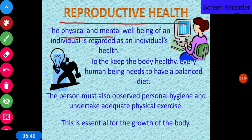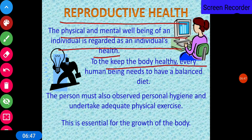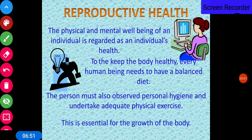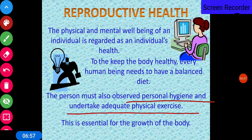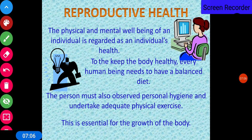The physical and mental well-being of an individual is regarded as health. To keep the body healthy, every human being needs to have a balanced diet. One must also observe personal hygiene and undertake adequate physical exercise, which is essential for the growth of the body. Both a balanced diet and exercise are essential for growth.